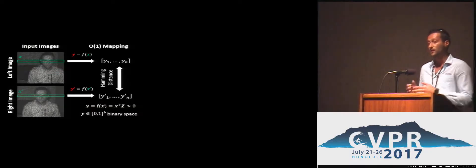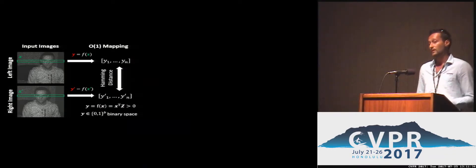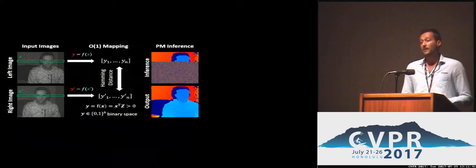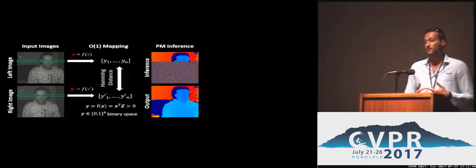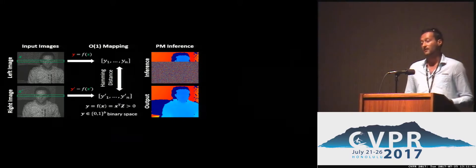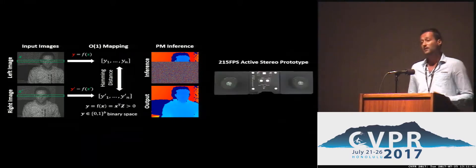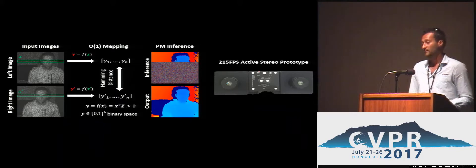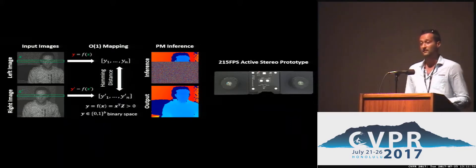We start from a stereo pair and remap every image patch into a compact representation. This mapping is learned once offline and is sparse, which means it's independent of the window size. Then we have a patch match-like framework that computes distances in the new space and is able to infer the disparity. We also built an active stereo prototype capable of running at 215 FPS to show the system in action.